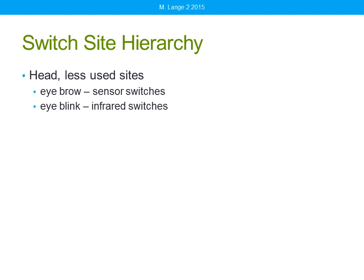Less-used but helpful sites include at the eyebrow using sensor switches and eye blink using infrared switches. For eye blinks, you definitely want to use infrared — fiber optic light can be damaging to the white of the eye, so do not use fiber optics for eye blinks. Infrared is safe to be directed towards the eye.